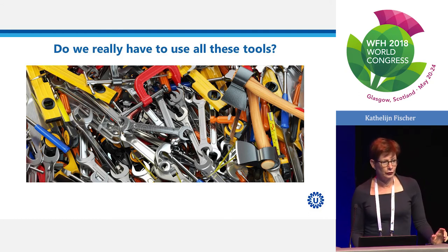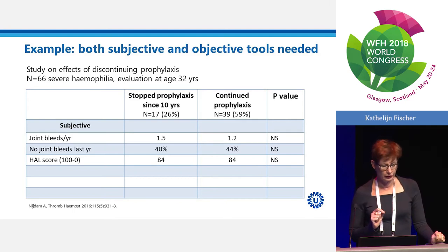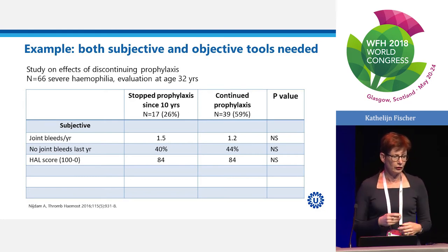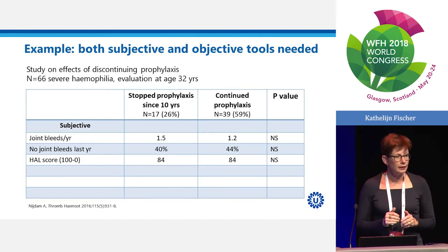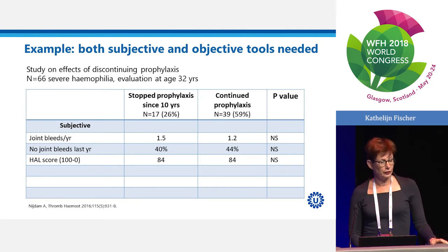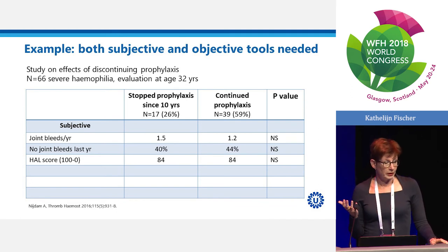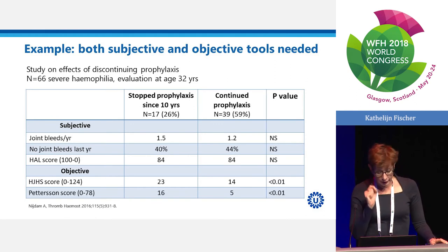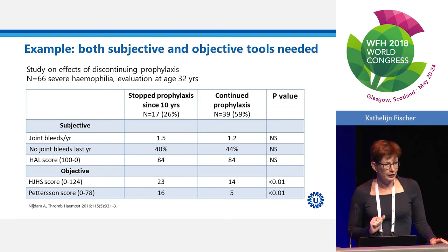One clinical example to show this is not easy: a study on effects of discontinuing prophylaxis in 66 severe hemophilia patients evaluated at age 32. Seventeen had stopped prophylaxis 10 years ago and said they were fine — treating on demand, not bleeding, no complaints. The other patients continued prophylaxis. Looking at joint bleeding, numbers were low; 40% had no joint bleeds last year; health scores between groups were similar. But with objective outcomes — HHS and Patterson score — the difference was significant. They said they were fine, but if you look more closely, they were not.